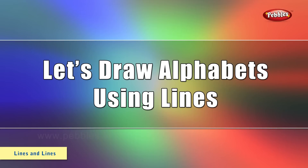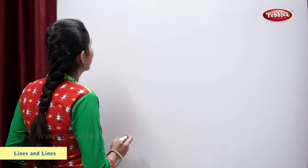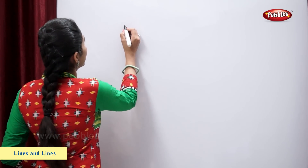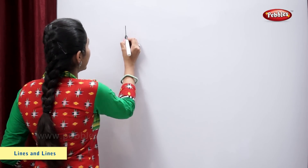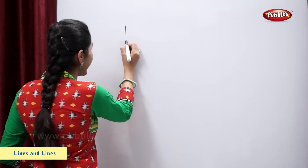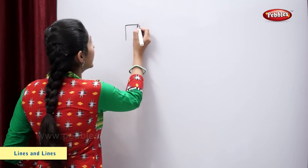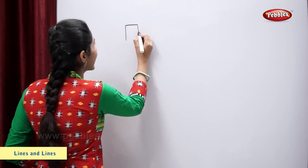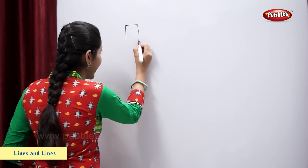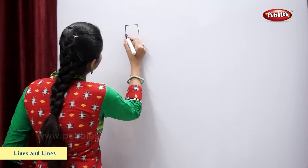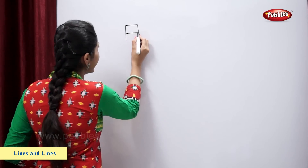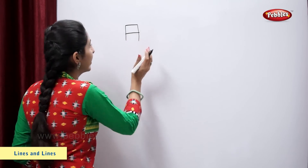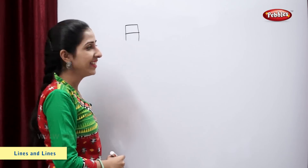Now, let's draw alphabets using lines. A standing line, sleeping line, standing line, another sleeping line — letter A.